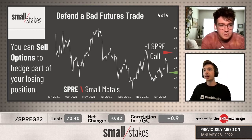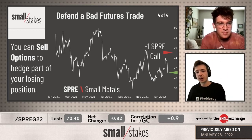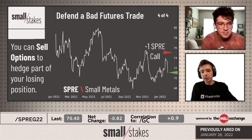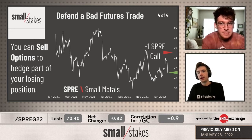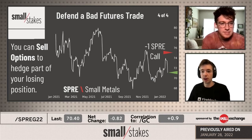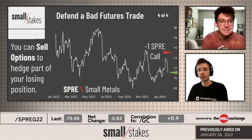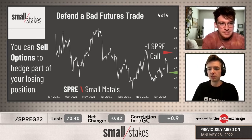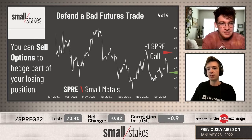You're reducing your cost basis and giving yourself a little more wiggle room, as opposed to just being directionally exposed to the fifty-fifty movement in futures. You're adding a little bit of probabilistic edge by reducing that cost basis.